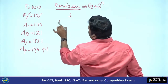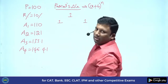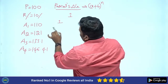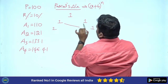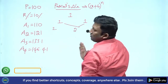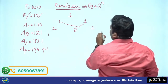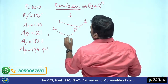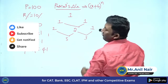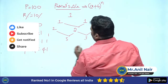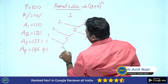First, write down 1. Write 1 on the leftmost, write 1 on the rightmost. Again write 1 on the leftmost and 1 on the rightmost. Add: 1 plus 1 equals 2. Write 1 on the leftmost and 1 on the rightmost. 1 plus 2 equals 3.